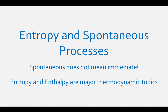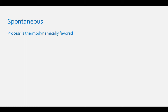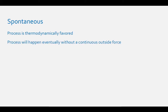One important concept to keep in mind is what the word spontaneous means in chemistry. Spontaneous means that a process is thermodynamically favored. All this means is that a process will happen eventually without any continuous outside force. It does not mean that it will go fast or happen instantly, although it could go fast. Usually, spontaneous just means that a chemical reaction will happen eventually.